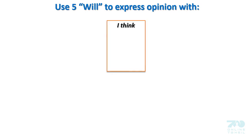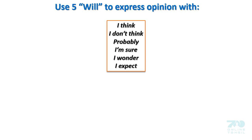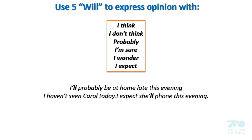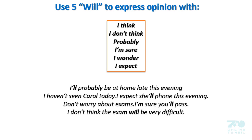Use 5: will to express opinion, often with phrases like I think, I don't think, probably, I'm sure, I wonder, I expect. Examples: 'I'll probably be at home late this evening.' 'I haven't seen Carol today. I expect she will phone me this evening.' 'Don't worry about exams — I'm sure you will pass.' 'I don't think the exam will be very difficult.' 'I wonder what will happen.'